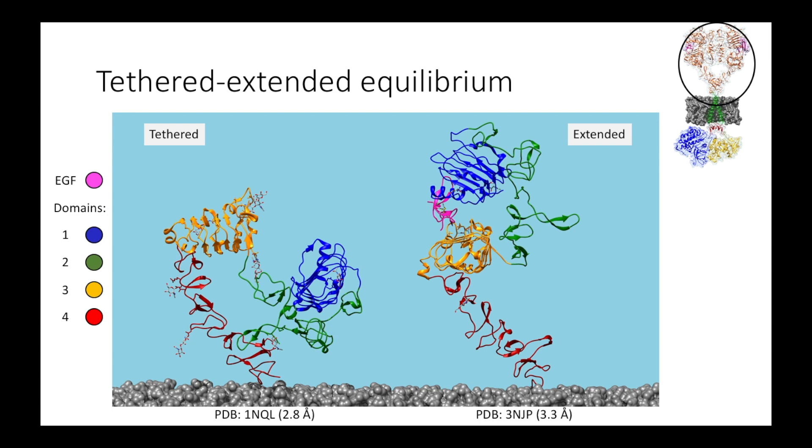The EGFR dimerization model proposes that the extracellular module exists in an equilibrium between either tethered or extended conformations. Interactions between domains 2 and 4 stabilize the tethered conformation. When EGFR binds at the interface between domains 1 and 3, it stabilizes the extended conformation. All four domains are structurally quite rigid, and so they tend to only deform at the flexible linkers between them.